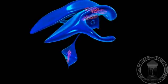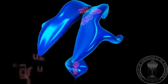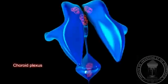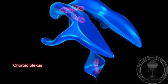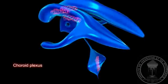The CSF is secreted by the choroid plexus, clusters of capillary blood vessels located in the ventricular system.